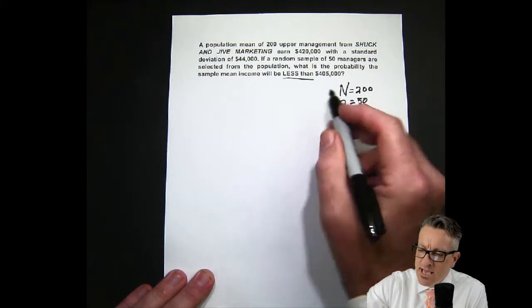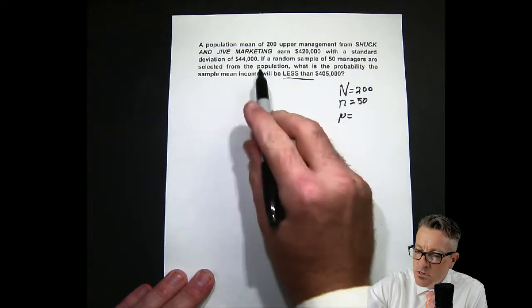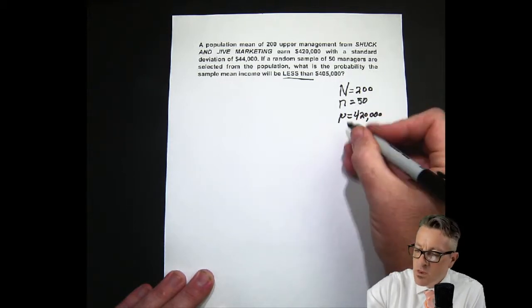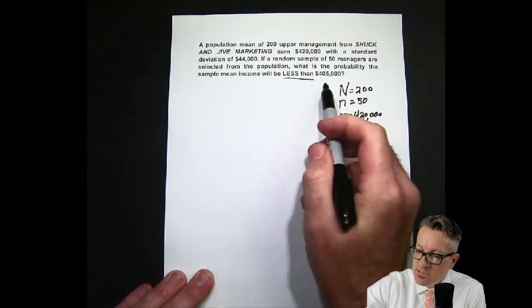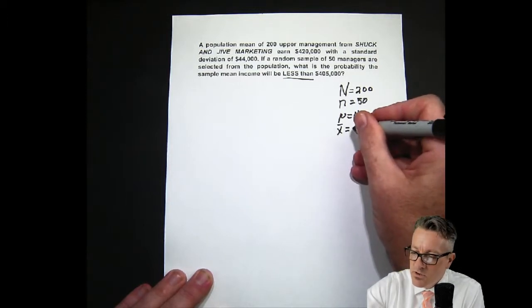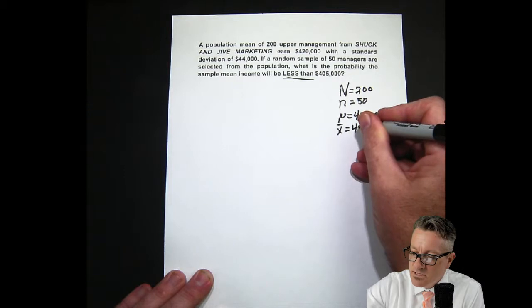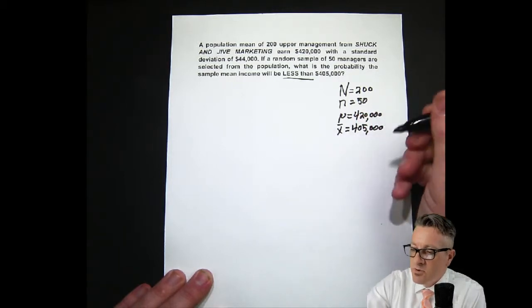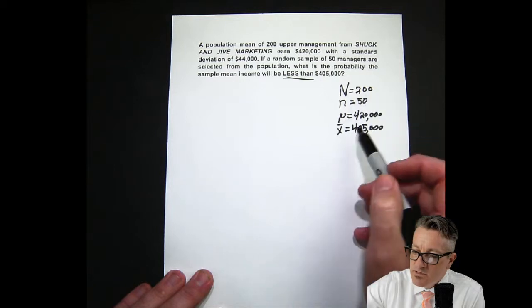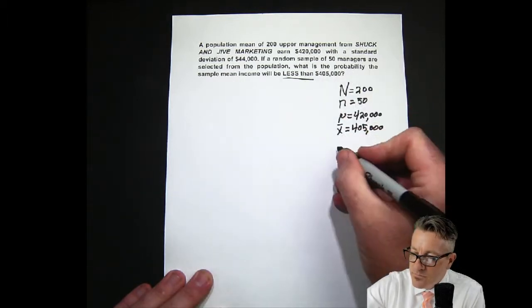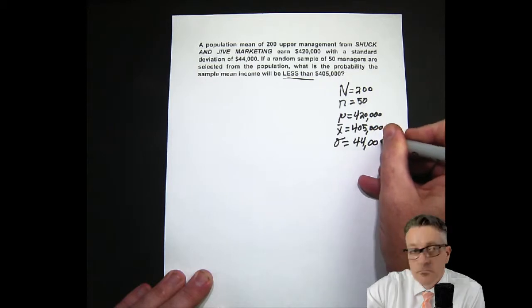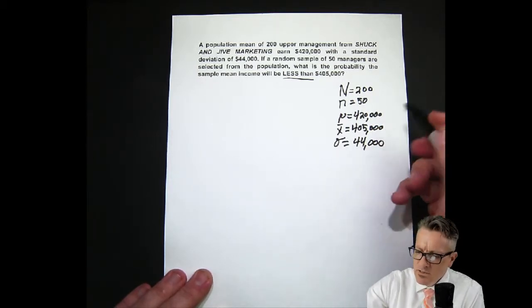We have our big N, little n, and then our mu. Our mu is $420,000. Our X-bar — we're finding the probability for it being less than $405,000. And our standard deviation, sigma, is $44,000.